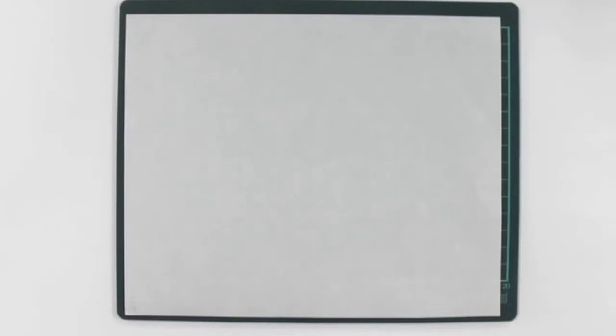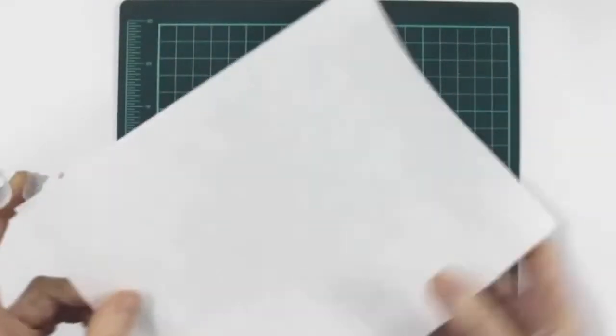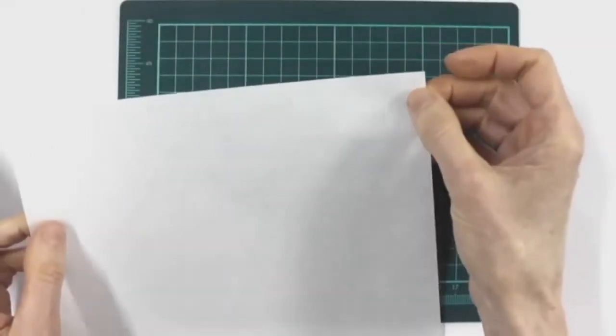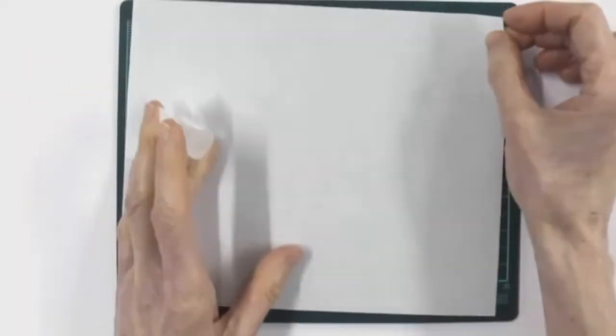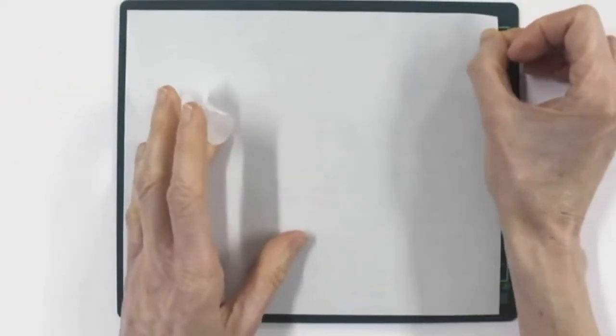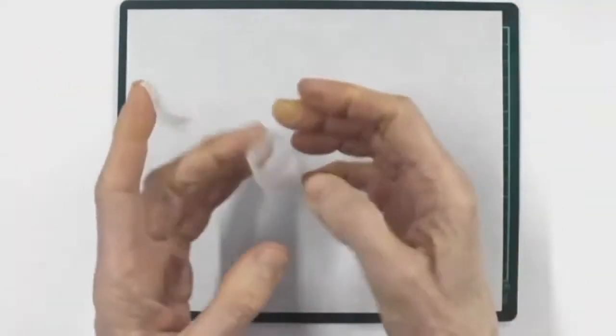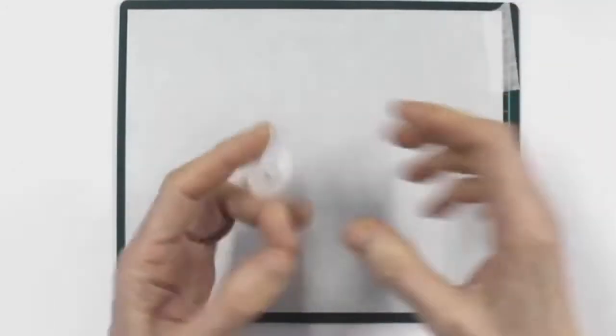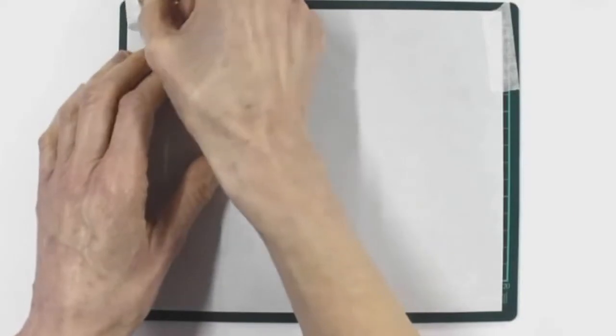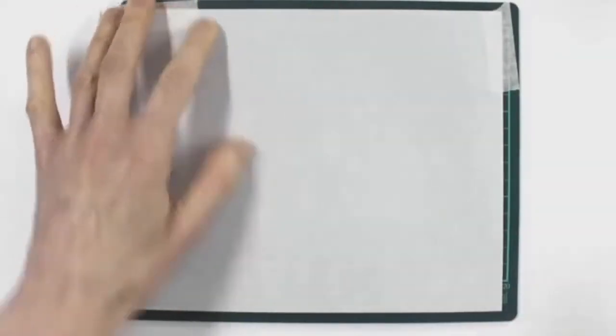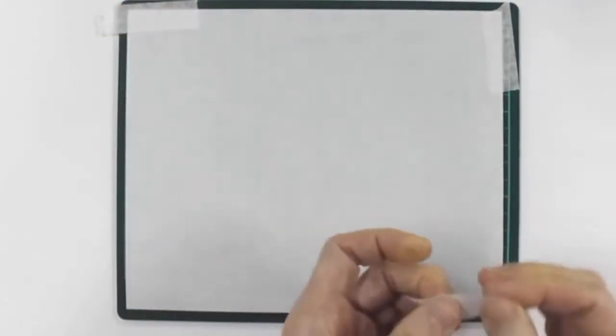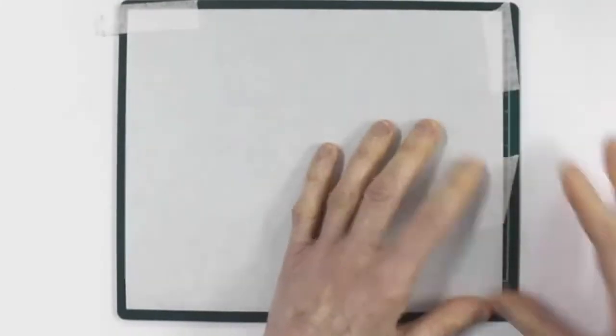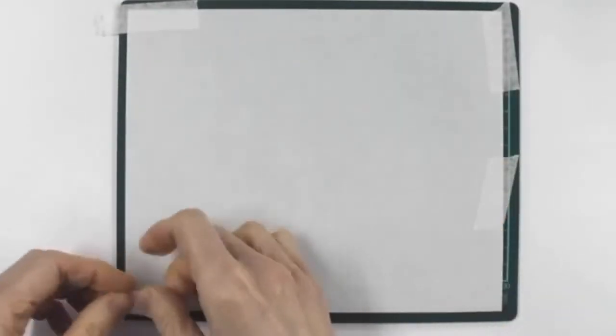You have to make certain, especially when you're using markers and marker paper, that you've got the right side. Every time I take marker paper out of my pad, I put a check mark in the corner in pencil to show me that this is the back of my paper. I'm going to secure it to my cutting board. It can't move. It's got to stay still.